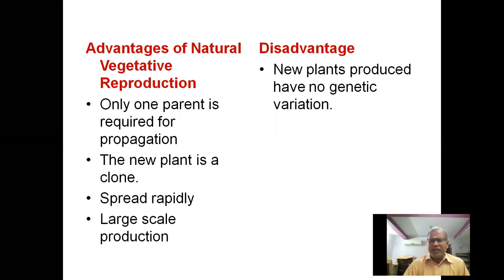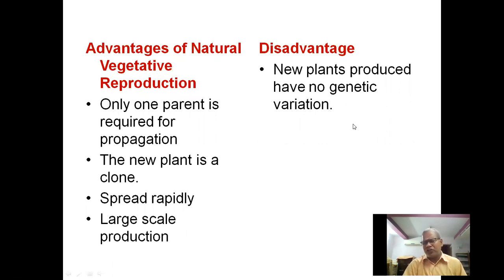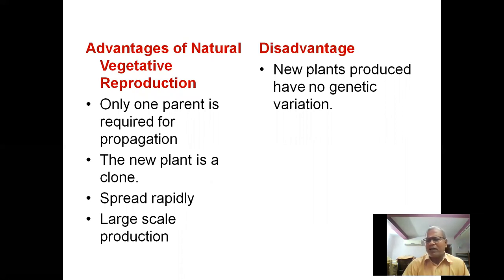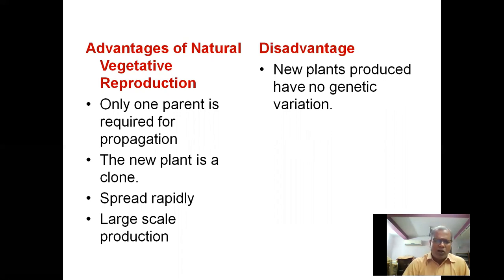What is the disadvantage? New plants produced have no genetic variation. Vegetative propagation involves only mitotic cell division. Because meiotic cell division is absent, there is no possibility of any genetic variation.